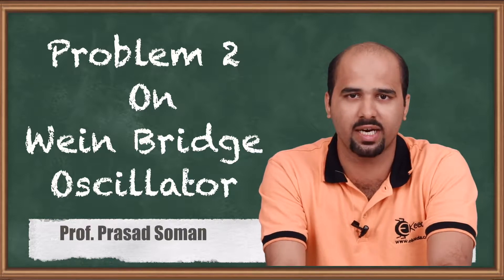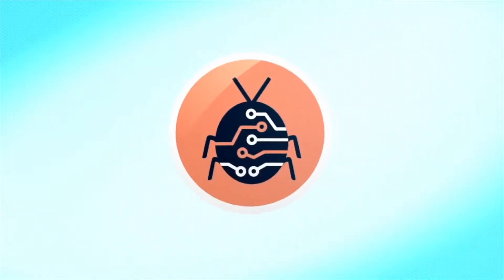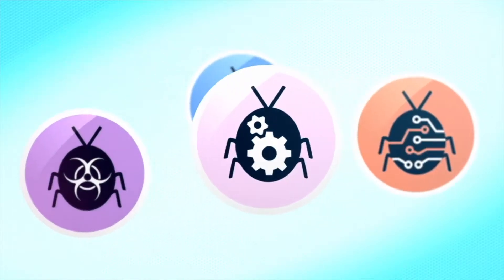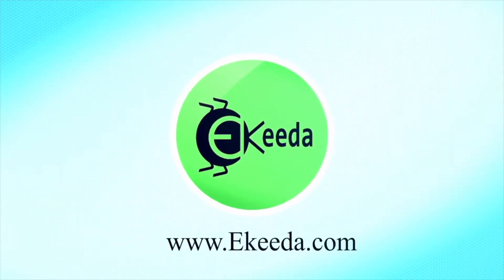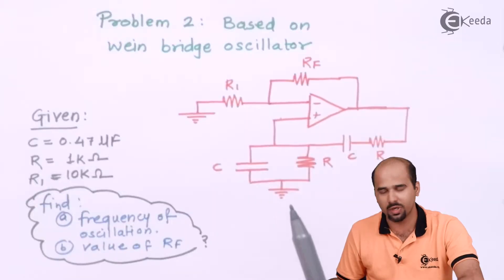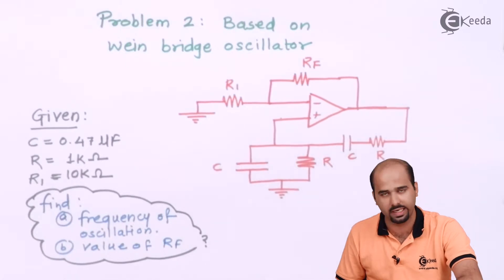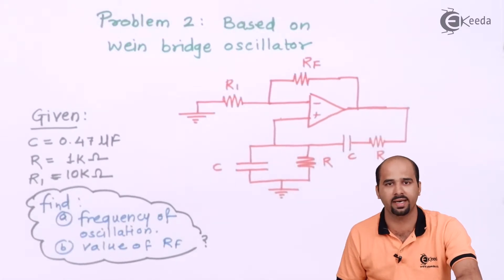So let's move towards that particular numerical. In this particular numerical we have the op-amp as an amplifier and this particular RC connected network is giving us the idea that it's nothing but Wien bridge oscillator.